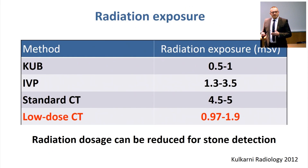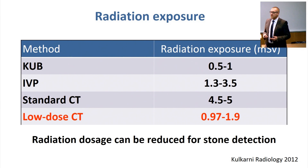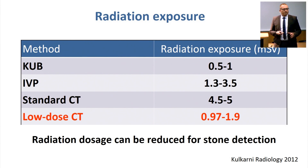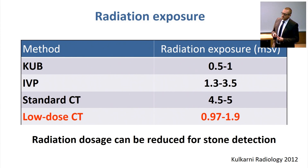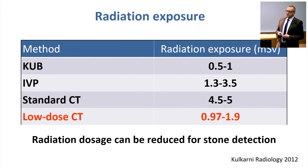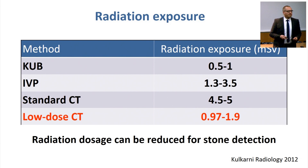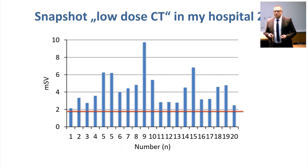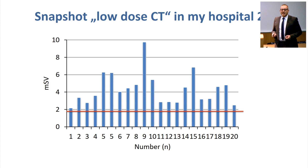When CT came up roughly 20 years ago, there was a lot of discussion about radiation. We always thought the KUB and the IVP have significantly less radiation than a CT. That is true if you refer to a standard abdominal CT. If you reduce the radiation dosage — which you can for stone detection — as you see here, it's not much different from a standard IVP. Four years ago, I asked our radiologist to give me the data of the last 20 so-called low-dose CTs they had done, and as you see here, there's hardly any true low-dose CT.